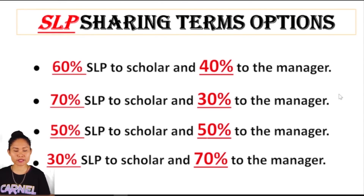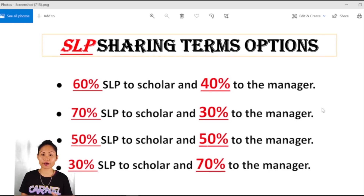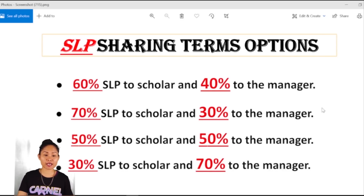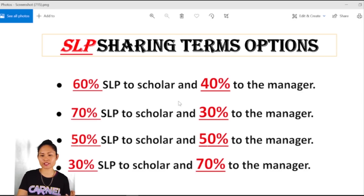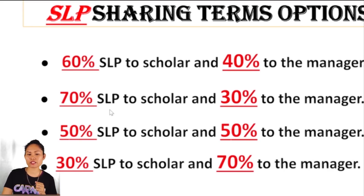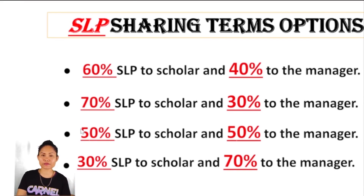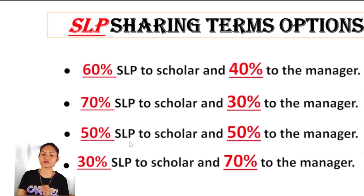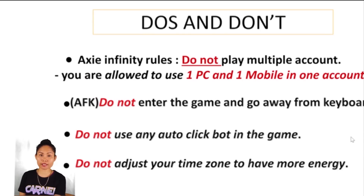That's how you set up your scholar account in Axie Infinity. Additionally, I'll share some SLP sharing terms — good for beginners like me. The options are: 60% SLP to the scholar and 40% to the manager; or 70% to the scholar and 30% to the manager. My personal choice is 50/50 — 50% to the scholar and 50% to the manager.